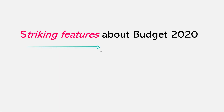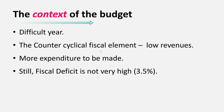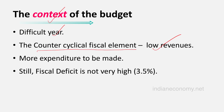Welcome to this short session on striking features of Budget 2020. We will consider the most important feature: the disinvestment target. Before going into details, let's consider the context. This was an unusually difficult year with lower revenues, and the government was about to launch a counter-cyclical fiscal policy featuring reduced revenues and higher expenditure. Despite this, the government managed to contain the fiscal deficit to around 3.5% of GDP, which was a substantial achievement.